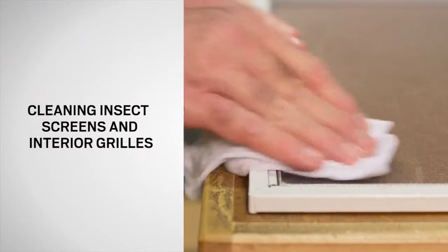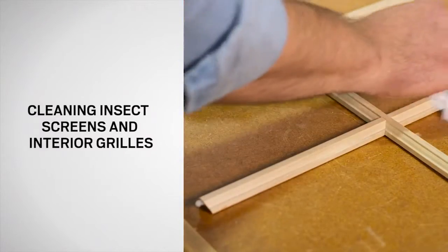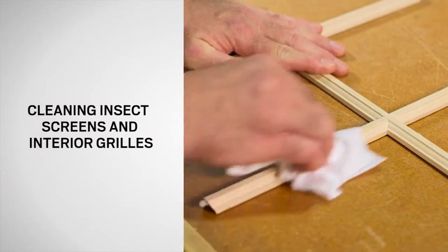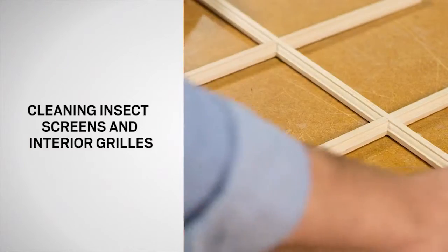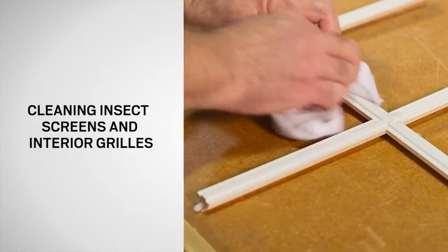When cleaning your insect screens or removable interior grills, first remove them from your window and place on a clean flat surface. Use a soft cloth and a solution of water and mild detergent to clean. Be sure to dry the grill after cleaning.